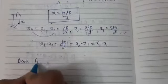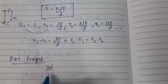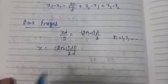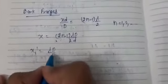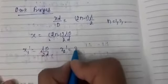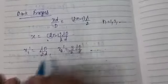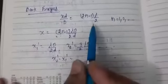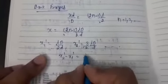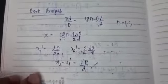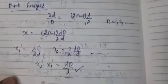For dark fringes (destructive interference), the path difference must equal (2n−1)λ/2, where n = 1, 2, and so on. Substituting, the positions of dark fringes are x₁' = λD/2d, x₂' = 3λD/2d, and so on. The difference between consecutive dark fringe positions is also λD/d, the same as for bright fringes.